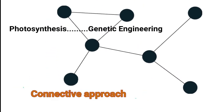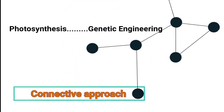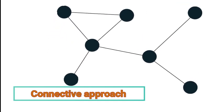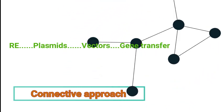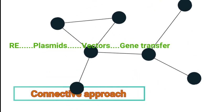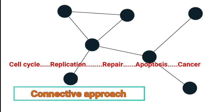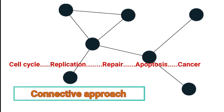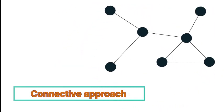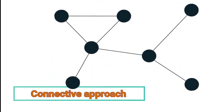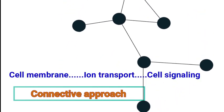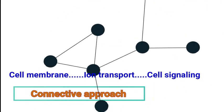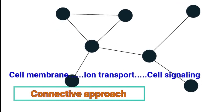Connective approach: for example, study photosynthesis, then go for genetic engineering — how to improve photosynthetic efficiency by genetic engineering. If you're studying restriction enzymes, then study plasmids, then plasmid vectors, then DNA transfer to animals and plants. If you study cell cycle, then study replication, DNA repair, apoptosis, and cancer — these topics are related; many molecules involved in one are also involved in others. Cell membrane structure: after studying it, study ion transport, then link it with cell signaling. If we do the connective approach, we can cover two or more units in a day.